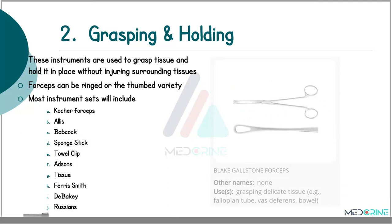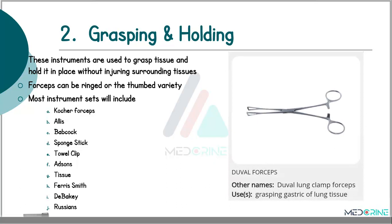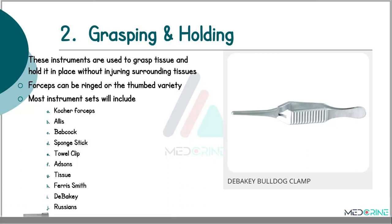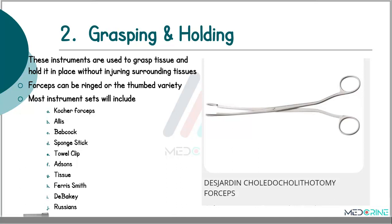We have Lovelace forceps for grasping lungs. We have a Blake gallstone forceps used in grasping delicate tissues, for example fallopian tubes, the vas deferens and also the bowels. We have a Duval lung clamp forceps used to grasp lung tissues. DeBakey bulldog clamps are also a grasping and holding instrument. We have a Desjardin choledochotomy forceps.